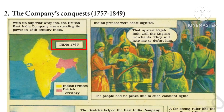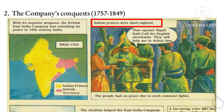India, 1765 - Indian princesses मतलब भारतीय राजा, British territory याने British क्षेत्र. Indian princesses were short-sighted - भारतीय राजा अदूरदर्शी थे. Short-sighted याने अदूरदर्शी. 'Call the English merchants - अंग्रेज व्यापारियों को बुलाओ, they will help me to defeat him - वे मेरी सहायता करेंगे उसे हराने में.' Merchants याने व्यापारी, defeat याने हराना।